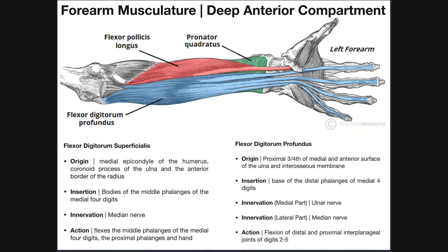The innervation of flexor digitorum profundus is dual. If we're looking at the medial part of this muscle — the part closest to the pinky side — that has innervation via the ulnar nerve. If we look at the lateral part of this muscle, closer to flexor pollicis longus, this one's going to be innervated by the median nerve. So it's dual innervation depending on how close you are to the medial edge of the muscle.